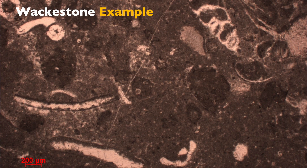Here's an example of a wackestone. You can see different skeletal components. There's definitely more than 10% skeletal component on this thin section, but there's mud in between the components, and so this is a wackestone.